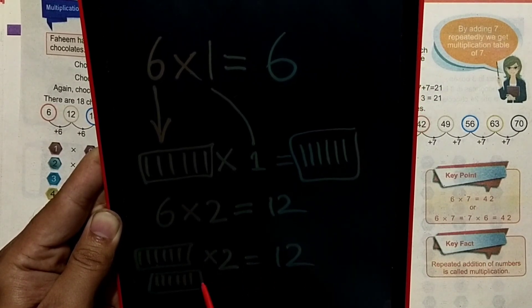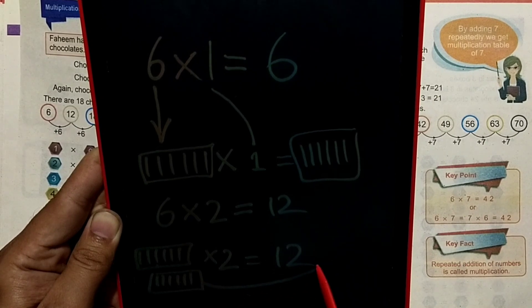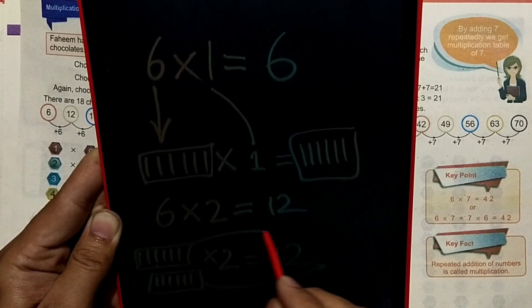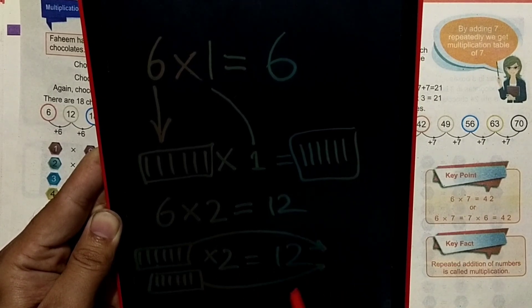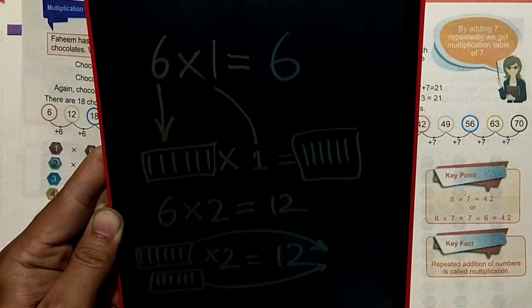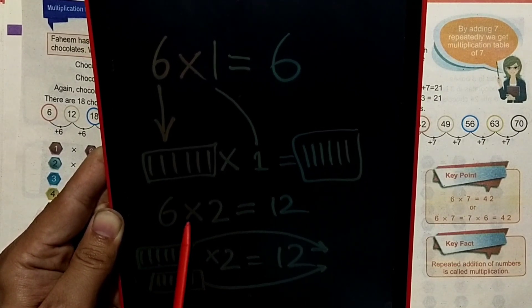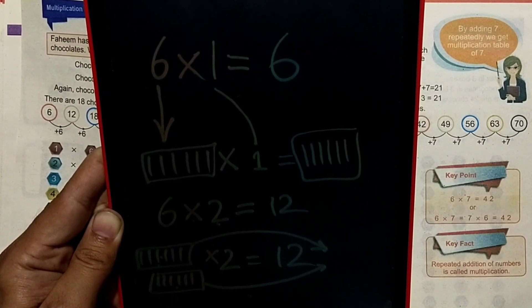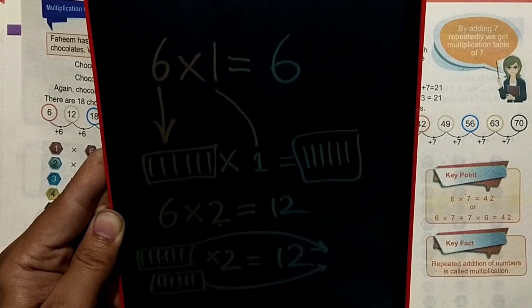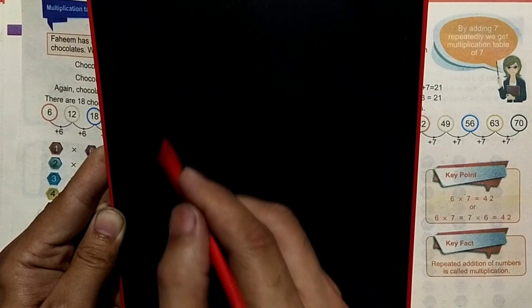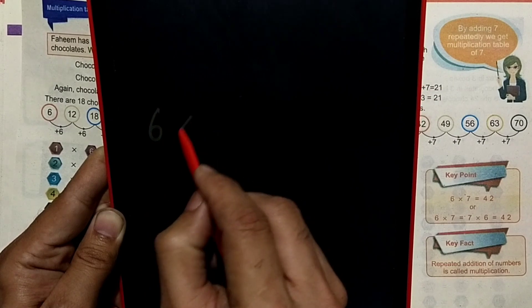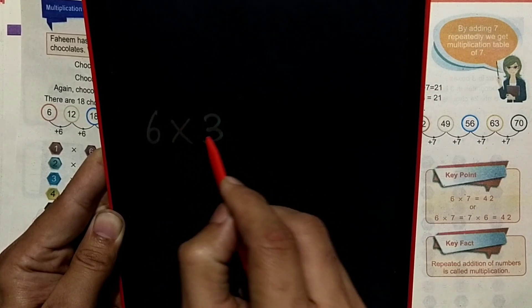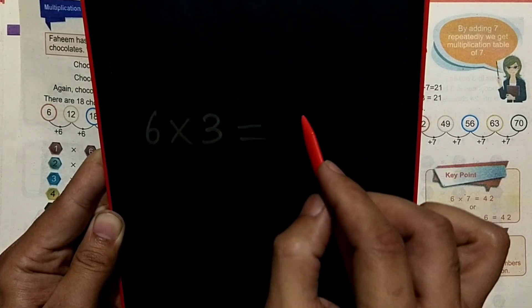6 multiplied by 2 is equal to 12. 6 multiplied by 3 is equal to 18.